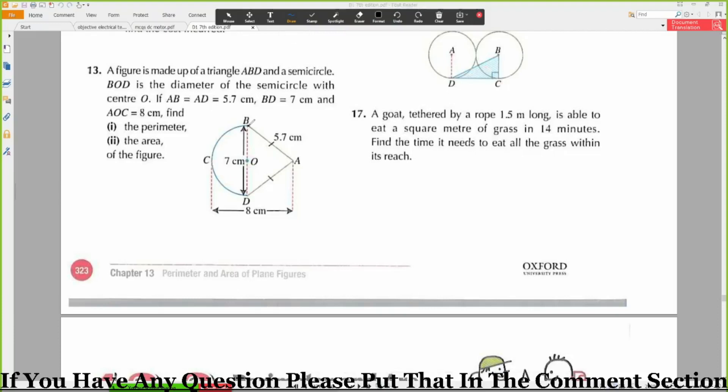So perimeter means that we need to find this length. So this length is given to me, that is 5.7 cm. How much is this length? 5.7 cm. This is unknown. So we need to find this length.